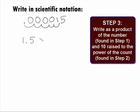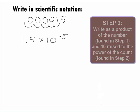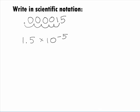In Step 3, we need to put this together and write it as a product of the number found in Step 1 and 10 raised to the power of the count found in Step 2. This gives us our final answer of 1.5 times 10 to the negative 5 power.